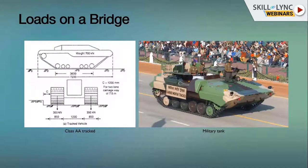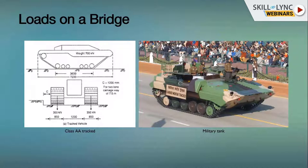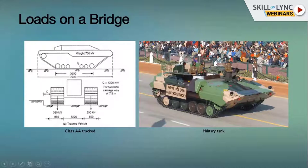If you look into IRC 6, the loading code for India, you can see a drawing which looks like a tanker. There are situations where these loads come into picture — for example, at the India-China border during aggressive movements, if you want to move our tankers to that place and the bridge is not considering this particular load, there is a good probability that bridge could collapse, creating a dangerous situation for the country's defense. In Indian code, it is called a Class A tracked vehicle.